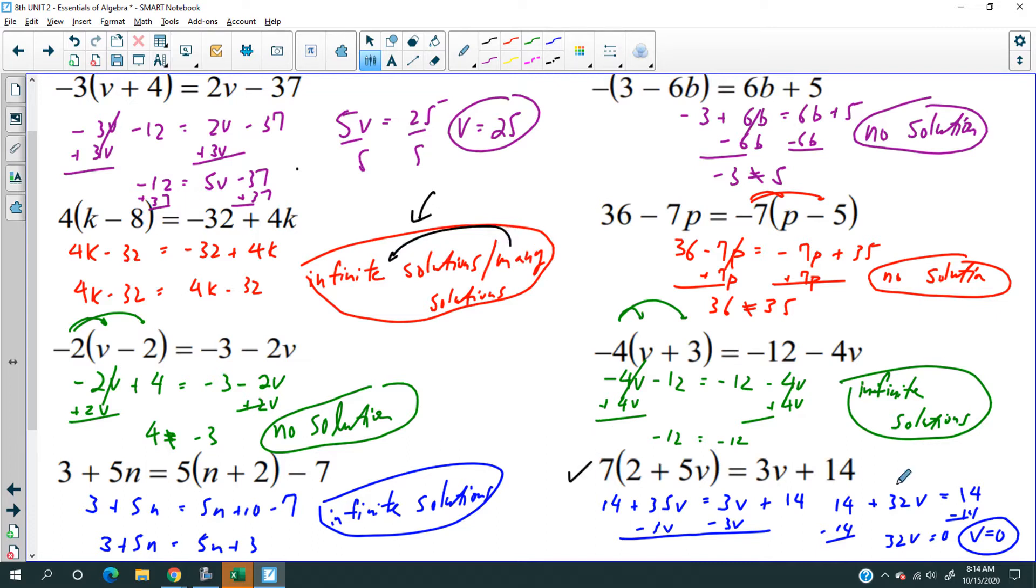Lastly, this one here, the answer is zero. Doesn't mean no solution. There's a solution. The answer is zero. The solution is zero. So don't get no solution confused with an answer of zero. No solution means there's nothing you can do. Getting a solution of zero means you did something, and you did it correctly. You got a zero for the answer. Or the solution.